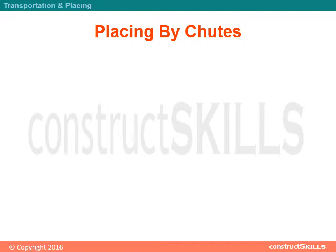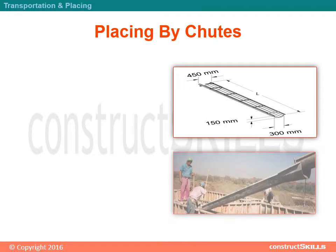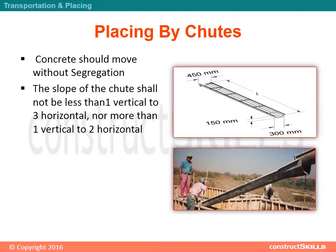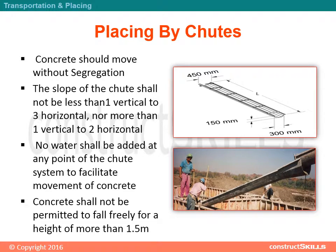Placing by chutes: concrete should move without segregation. The slope of the chute shall not be less than one vertical to three horizontal, nor more than one vertical to two horizontal. No water shall be added at any point of the chute system to facilitate movement of concrete. Concrete shall not be permitted to fall freely from a height of more than 1.5 meters.